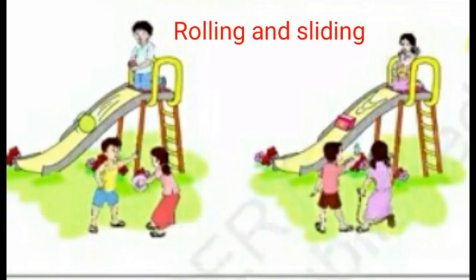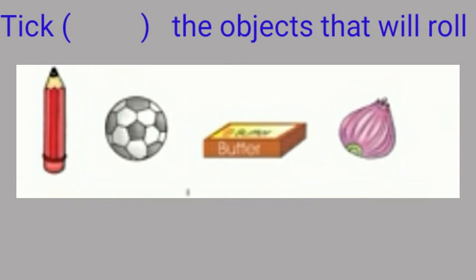Therefore ball is rolling and box is sliding. Example: tick the object that will roll. Pencil will roll, ball will roll. The box will not roll and onion will roll.